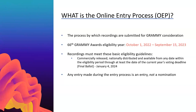Our 66th Grammy Awards eligibility year is October 1st, 2022 through September 15th, 2023. All recordings must meet these basic eligibility guidelines: commercially released, nationally distributed in the US, and available from any date within the eligibility period through the date of the current year's voting deadline — the final ballot — which is January 4th, 2024. We need voters to have reasonable access to listen to the things they could be voting on, so make sure your music is available through at least January 4th, 2024. Just to clarify: an entry made during this process is an entry, not a nomination. If it becomes a nomination, you will absolutely know — that's a whole separate process.